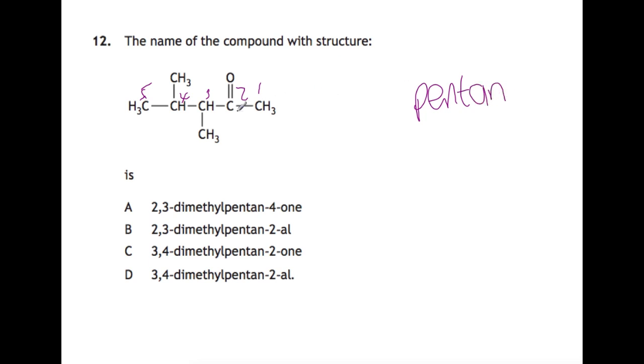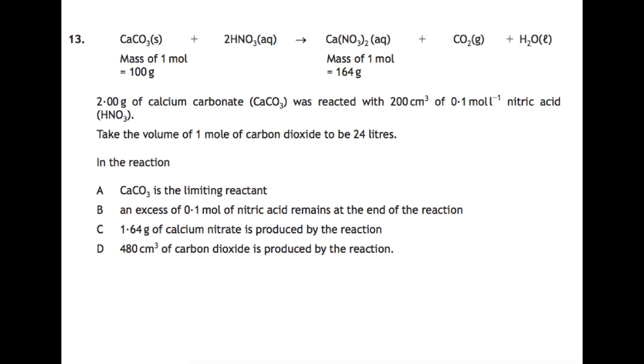On at number two we have the C double bond O, so that makes this a ketone, so it's pentan-2-one. And on numbers three and four we have two methyl groups, so that's going to be dimethyl. So let's have a look at the answers and try and match it up. We have 3,4-dimethylpentan-2-one, which is C.